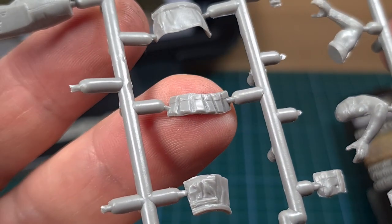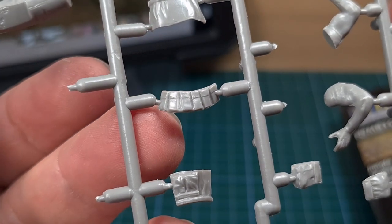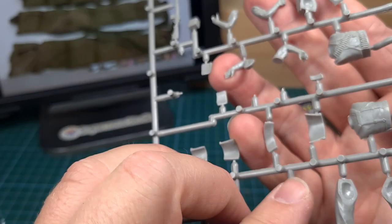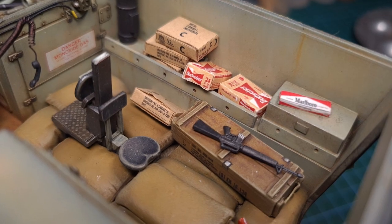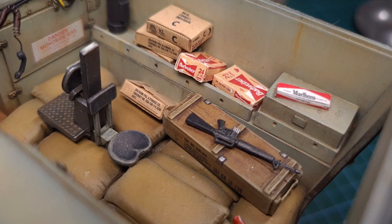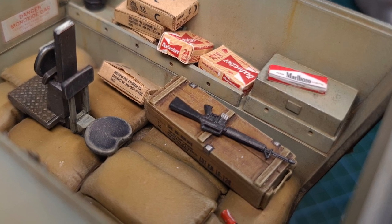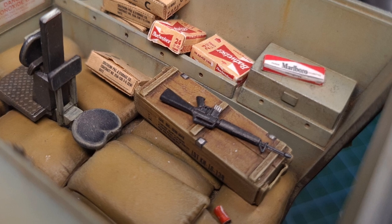Now you do find these in 1:35 figure kits but usually they are not in the correct shape. In this case I would like to drape it across the ammunition crate inside the M113 so I'll have to scratch build one myself. But before we get to that, a word from the sponsor.